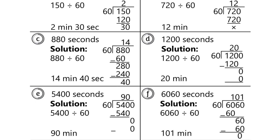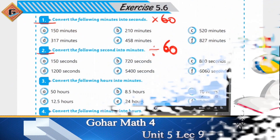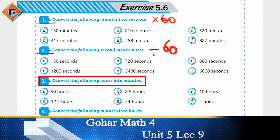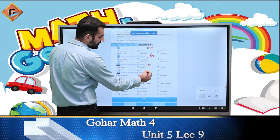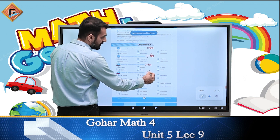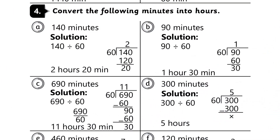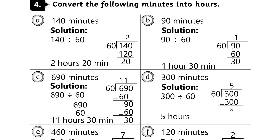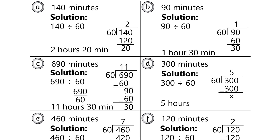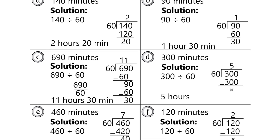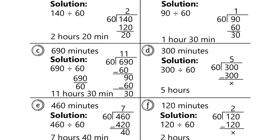Convert the following hours into minutes — hours को minutes में करने के लिए भी हम 60 से multiply करते हैं। Question 4 में minutes को hours में convert करने के लिए divide करेंगे 60 से। जो 60 से बड़े हैं वो hours में लिख सकते हैं, जो 60 से छोटे होंगे वो fraction में आ जाएंगे — fraction में आ जाएं तो कोई हर्ज नहीं।